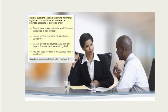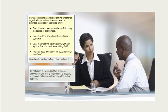Several questions can help determine whether an organization or individual is considered a business associate of a covered entity: Does it have a need to handle any PHI during the course of its business? Does it perform any administrative tasks using PHI? Does it provide the covered entity with any legal or financial services requiring PHI? Are they not a member of the covered entity's workforce? A covered entity's business associate is one that is involved in the effective running of that entity and who uses PHI in that capacity.